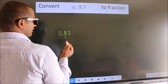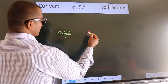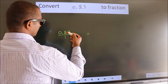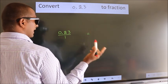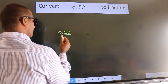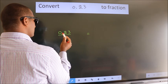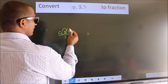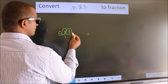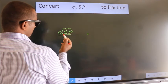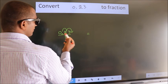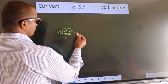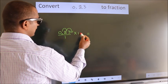Now, in order for us to convert this to a fraction, we should move this decimal 2 places. To move this decimal 2 places, we have to multiply it by 100.